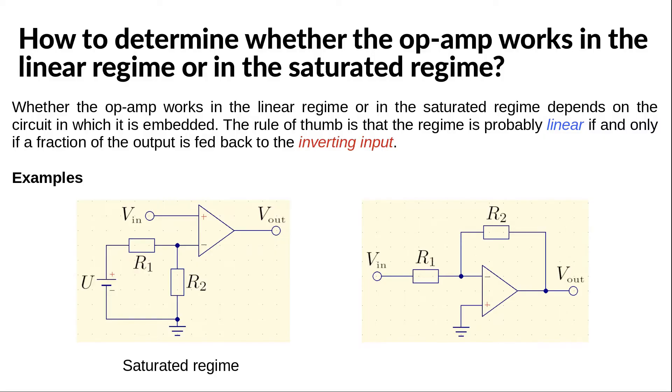Suppose that the voltage on the inverting input is positive. Then, the difference V in plus minus V in minus is negative and, as a result, the op-amp is going to try to output a large negative voltage. This will pull down the voltage applied to the inverting input until it becomes nearly equal to the zero voltage on the non-inverting input.